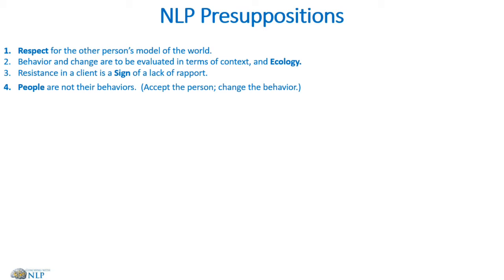The next presupposition: people are not their behaviors. We want to accept the person and change the behavior. This is very important because it allows us to accept the person while changing the behavior, because you are not your behavior. Everybody is magnificent and we help them in actualizing that magnificence. You are clearly more than your behavior — whatever behavior you think that you are, you know that you are more than that.